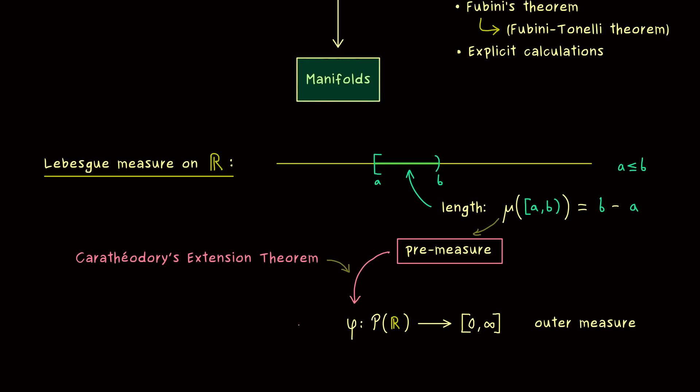And moreover, the technical term we have for this function phi is outer measure. But it's not so important right now. If you want to have the technical explanations, please check out the last part of the measure theory series.